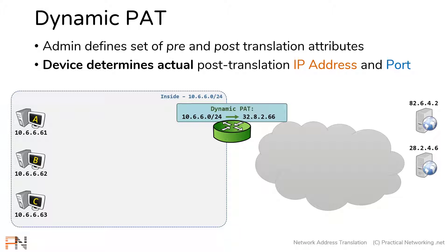We would tell our router that the IP address 10.6.6.0/24, the entire inside segment, is going to share the IP address 32.8.2.66. You might notice there are no ports in our configuration — that's interesting since this is supposed to be a PAT. The ports are going to come into play in a moment, even though they aren't specified in the configuration.